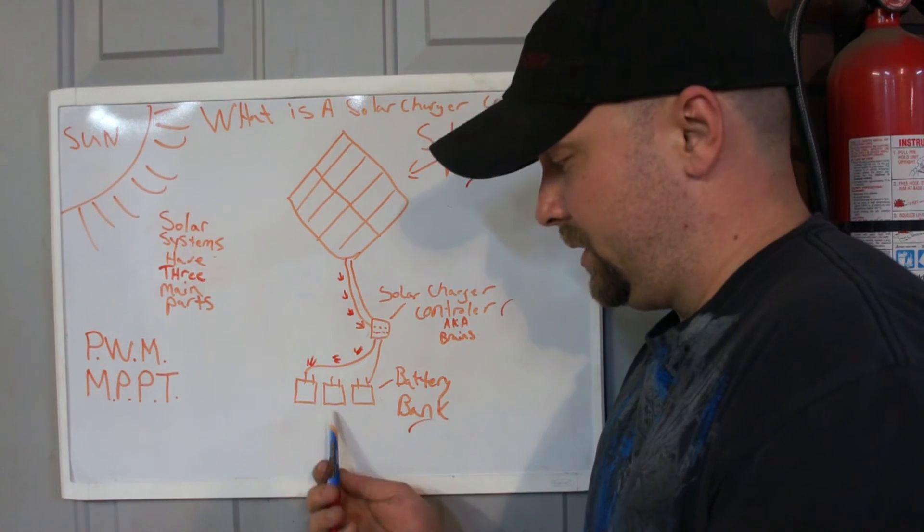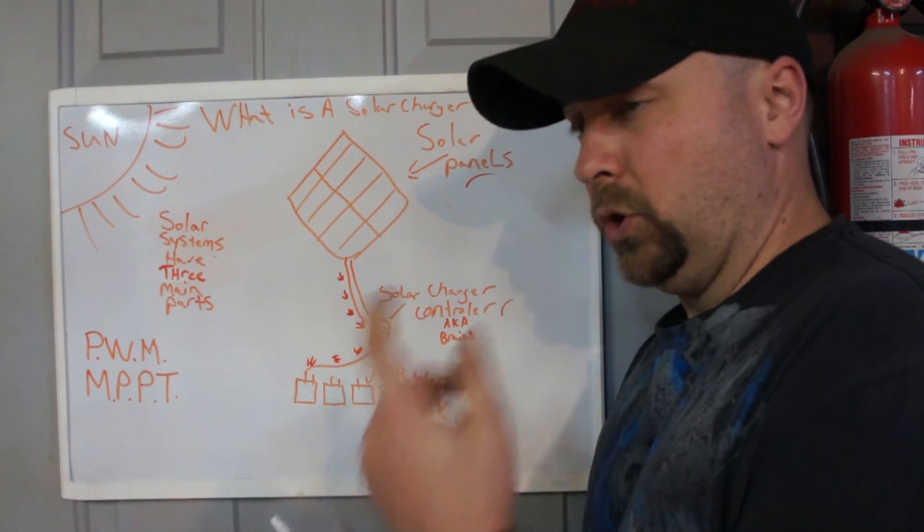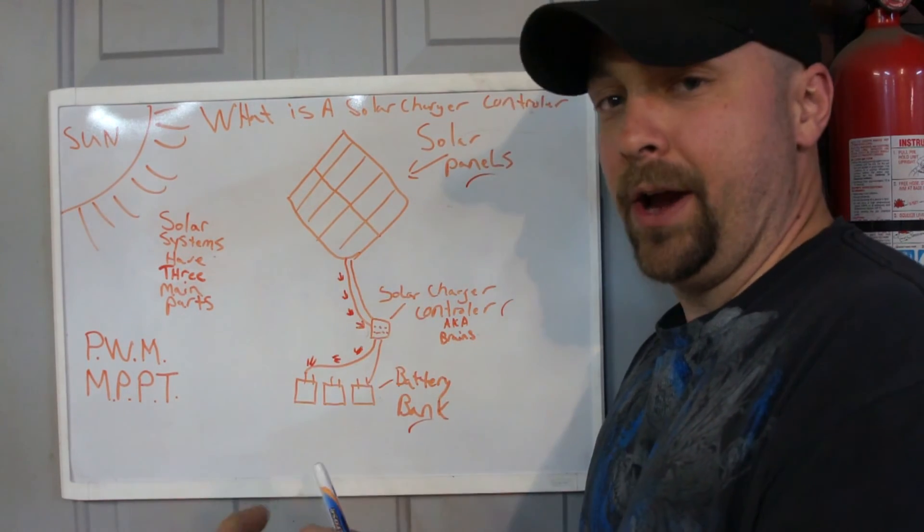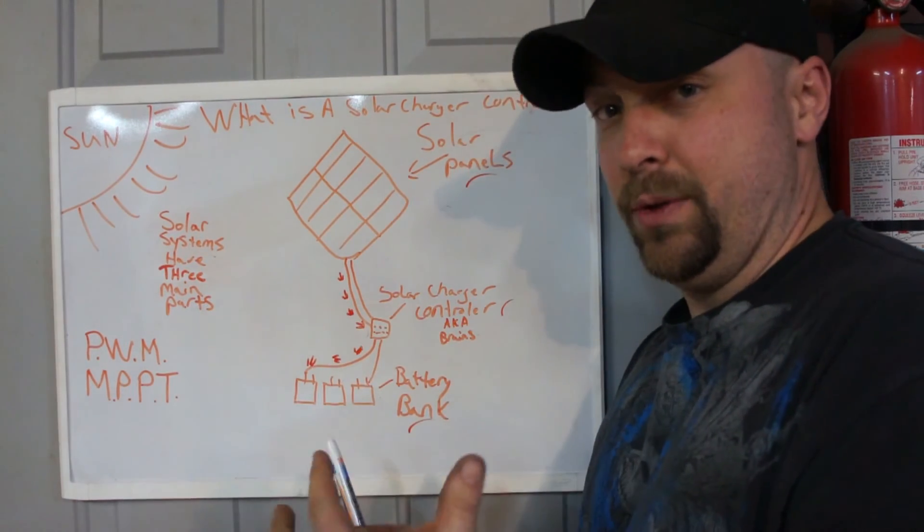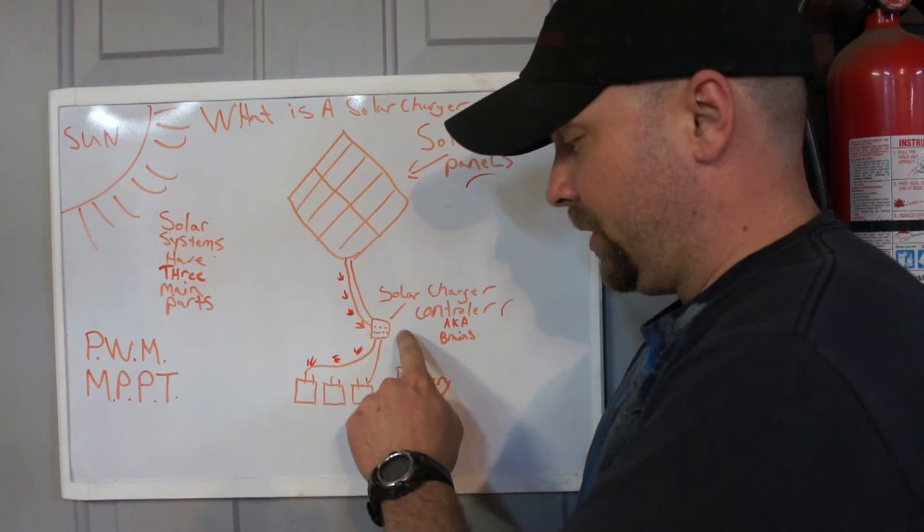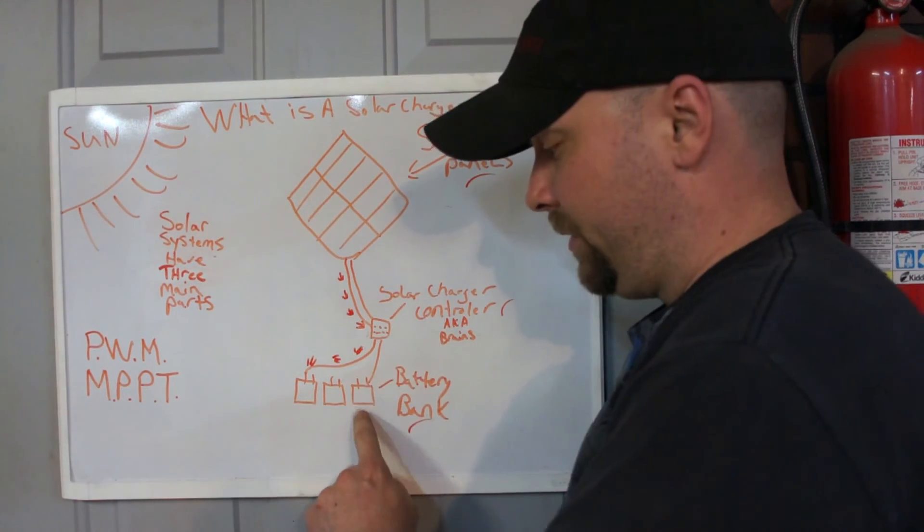Charging your batteries with a low voltage but say a higher amperage going to the batteries can actually damage the batteries and do them harm. A solar charger controller can protect your batteries from that.